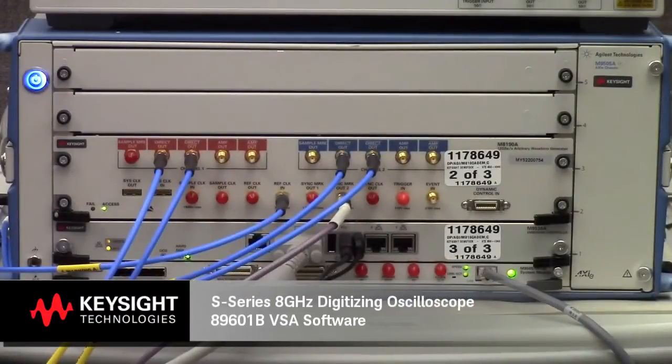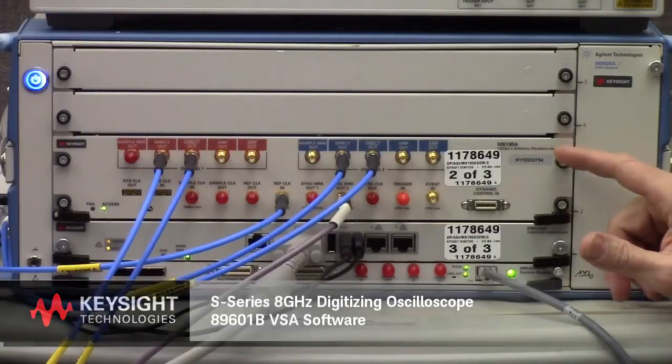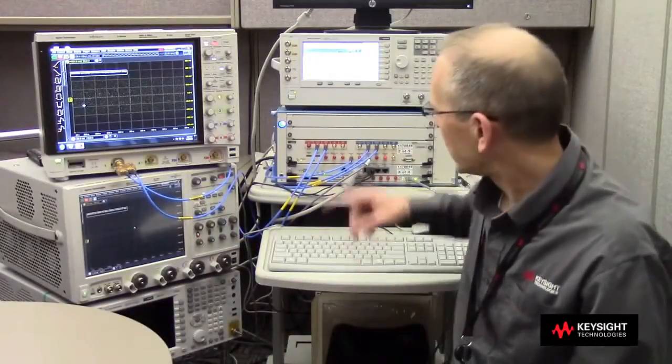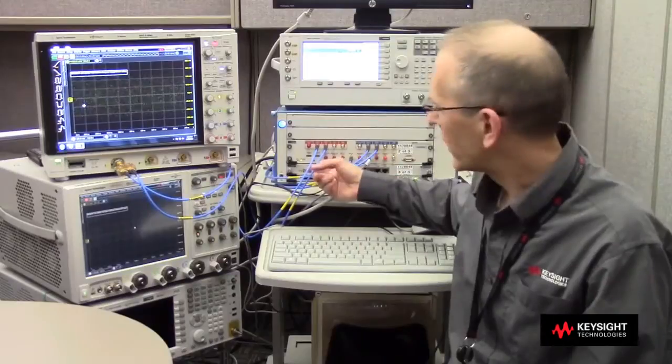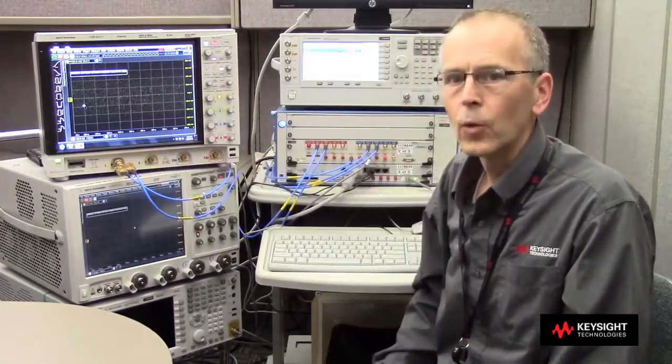A QAM16 signal with a 2 GHz carrier frequency and 2 GHz wide modulation is being created with the M8190A Arbitrary Waveform Generator. Differential signals are being brought out of the arbitrary waveform generator and brought over to a Balun and then into channel 1 of the oscilloscope.